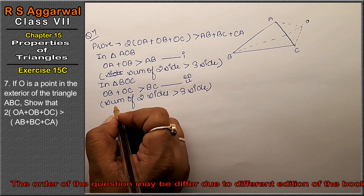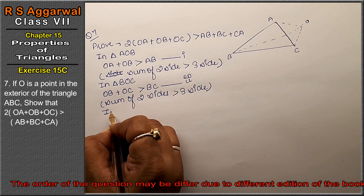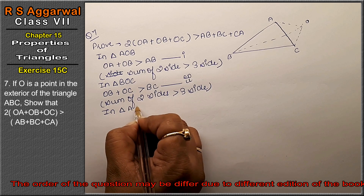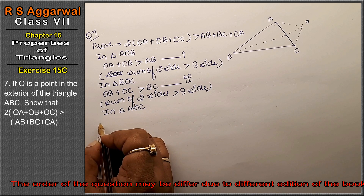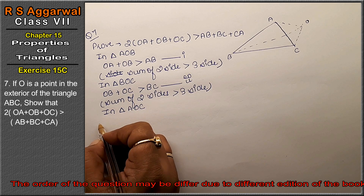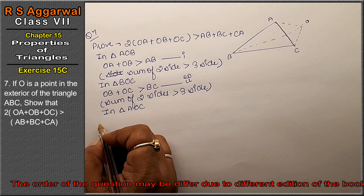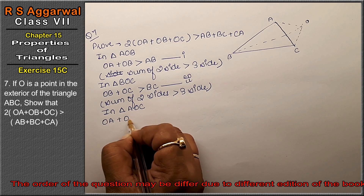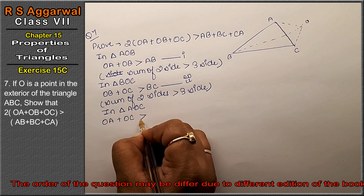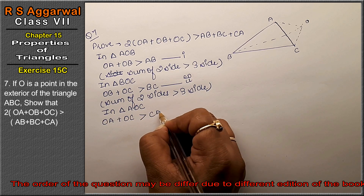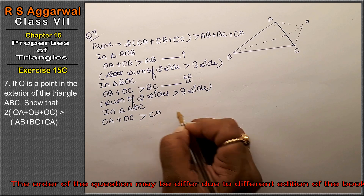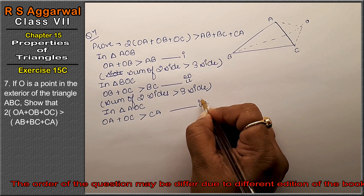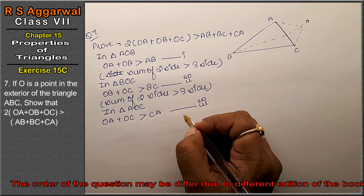In triangle AOC: OA plus OC is greater than CA. The reason is the same — sum of two sides is greater than the third side. This is our third equation.